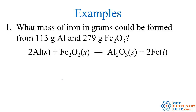In stoichiometry problems, we don't normally work with moles — we work with mass. Let's try an example using aluminum and iron three oxide. This reaction is called the thermite reaction. It gets extremely hot — so hot that it actually makes liquid or molten iron. They actually use this on the railroad: you take the two powders, mix them together, give them a spark, and it makes molten iron to weld together steel railroad ties. In our reaction, if we have 113 grams of aluminum and 279 grams of iron three oxide, how many grams of iron could we make?